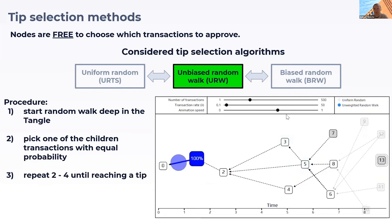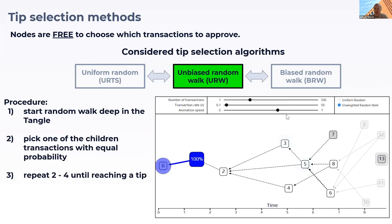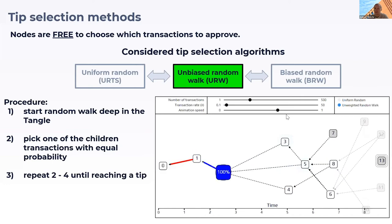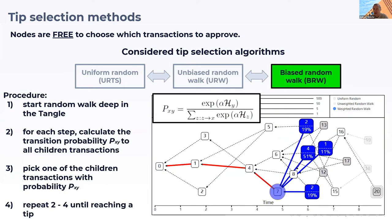These two mechanisms have a disadvantage: they do not penalize if a node issues a transaction that just approves an old transaction. This is bad because if the node just approves old transactions, it does not actually add to the security of the ledger.